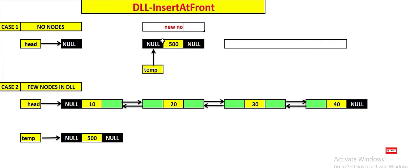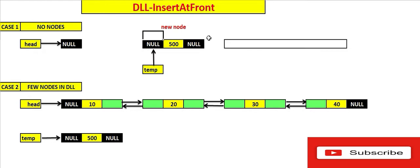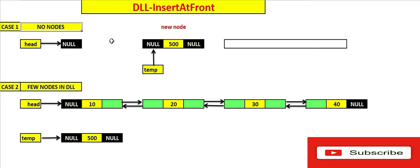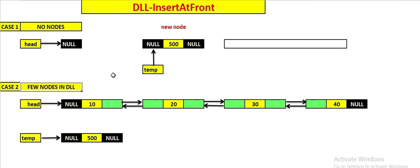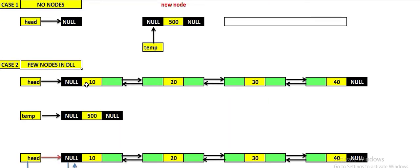We have two scenarios. Suppose this is the new node we create with a value of 500, and both its right link and left link are null. This is referenced by temp. The first case is that there are no nodes in the linked list — the head is pointing to null. The second case is that there are a few nodes in the DLL, say four nodes, and head is pointing to the first node, and we need to insert the new node with value 500 at the front.